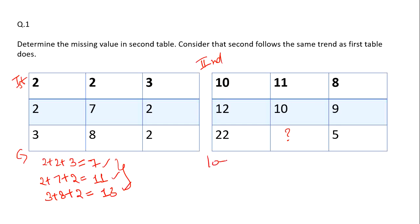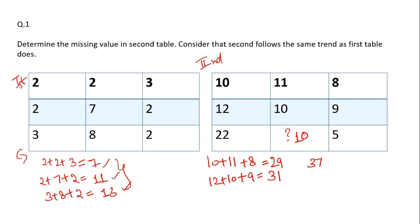Let's verify the same for the second table: 10 + 11 + 8 = 29, then 12 + 10 + 9 = 37. The next prime numbers in sequence are 29, 31, 37. So 22 + 5 = 27, and to get 37 we need 37 − 27 = 10. So the correct answer for this question is 10. Let's see the next question.